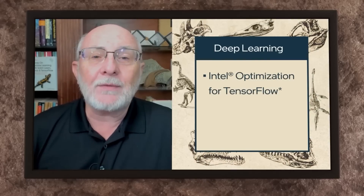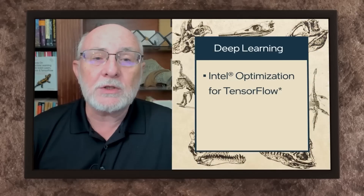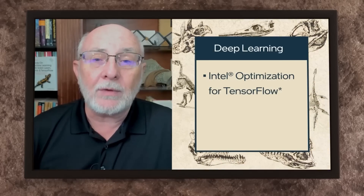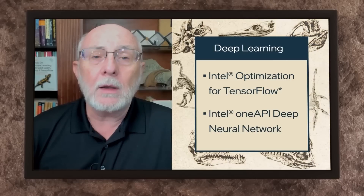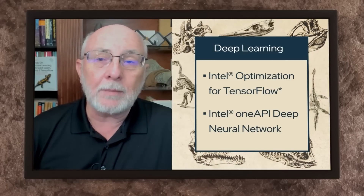With respect to deep learning, we have the Intel optimization for TensorFlow, which takes a lot of the optimizations that we do at the low level with the OneDNN library, also known as the One Deep Neural Network library.